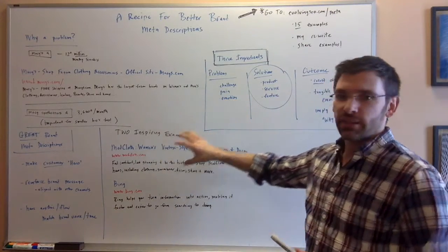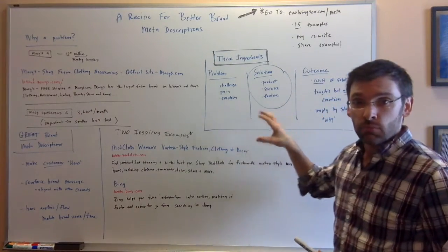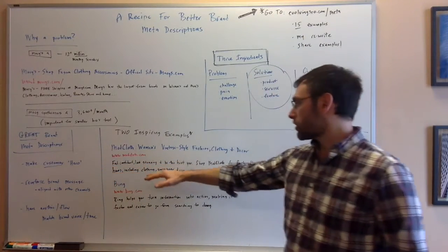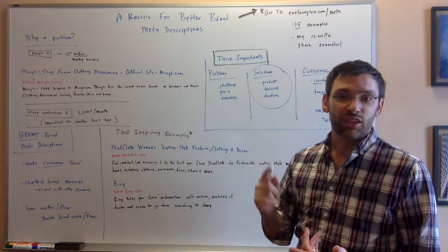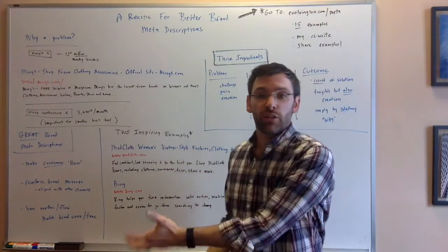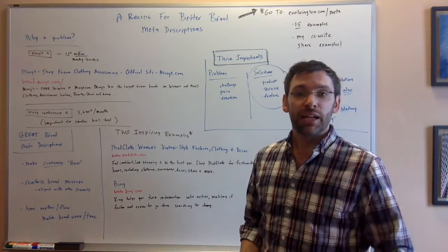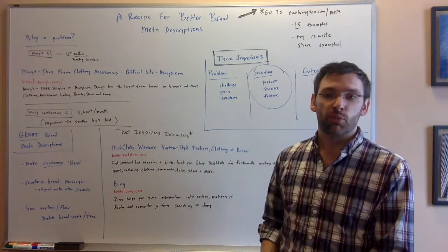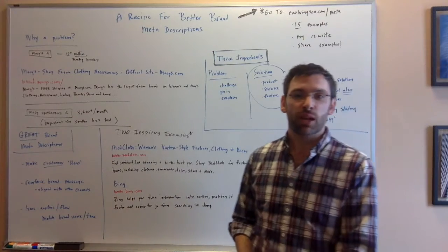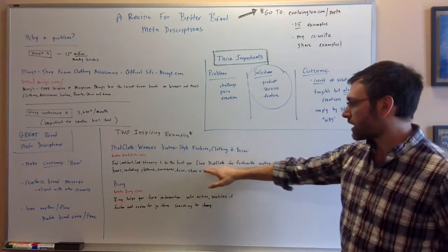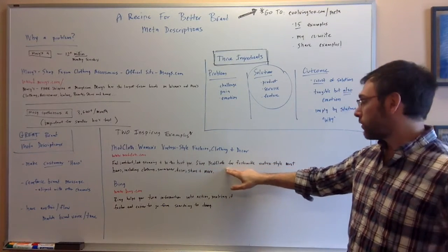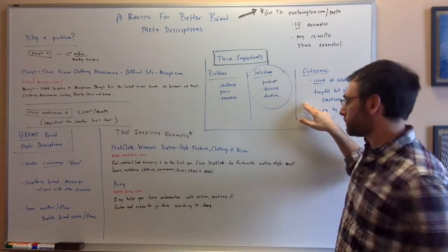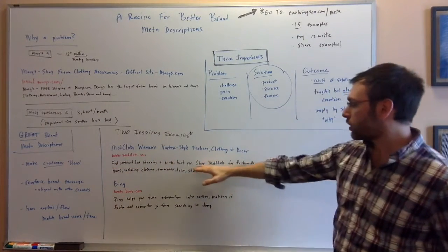Example number one, ModCloth. I love ModCloth's example here. So again, I'm going to read all these in case you can't see them. ModCloth's meta description says, feel confident, look stunning, and be the best you. Shop ModCloth for fashionable vintage style must-haves including clothing, swimwear, decor, shoes, and more. So I want to break these apart a little bit and look for each element. So what ModCloth has done is they've really put the outcome at the forefront. And this is what I love so much about ModCloth's meta description. They've said directly, feel confident, look stunning, and be the best you.